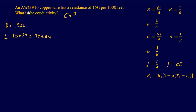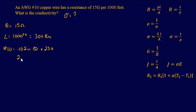Now to find the area, we have to look up in our code book what a 10-gauge wire diameter is. The 10-gauge wire in our code book is listed as 0.102 inches in diameter.